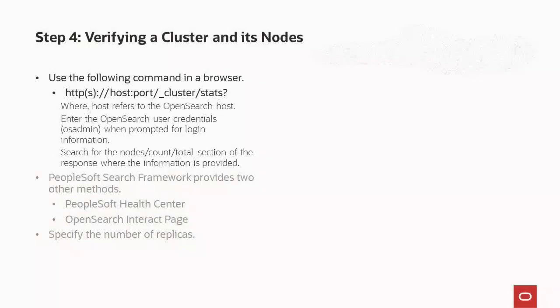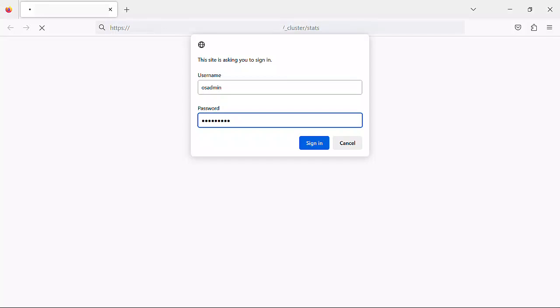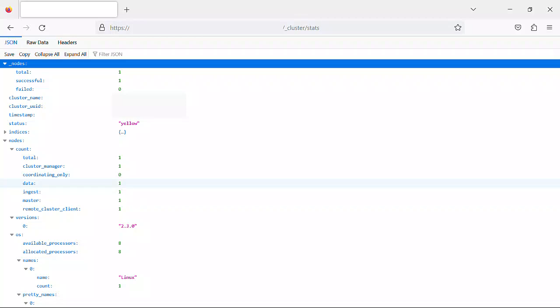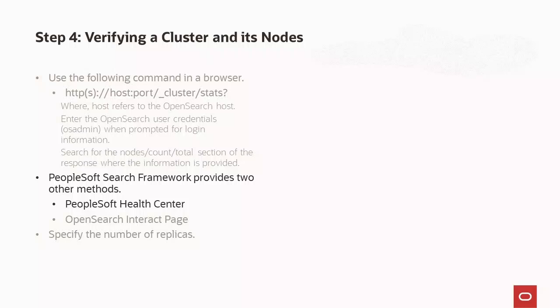At this point in the video, we have installed OpenSearch but have not yet integrated OpenSearch with the PeopleSoft environment. Before we integrate, use the command shown on your screen to verify a cluster and its nodes. In the command, the host refers to the OpenSearch host. You will be prompted to enter the OpenSearch user credentials — enter OS admin. In the response, search for the nodes.count.total section, where information on cluster and nodes is provided. After integrating, PeopleSoft Search Framework provides additional ways to verify a cluster and its nodes, including PeopleSoft Health Center and the OpenSearch Interact page. In a multi-node cluster, you must ensure that the replica values are set correctly; replicas are set on the search options page, which we will discuss later in this video.